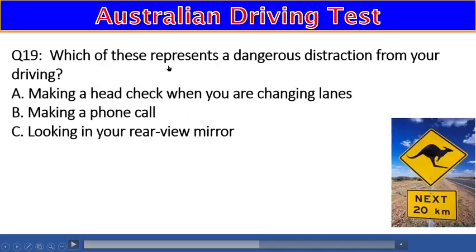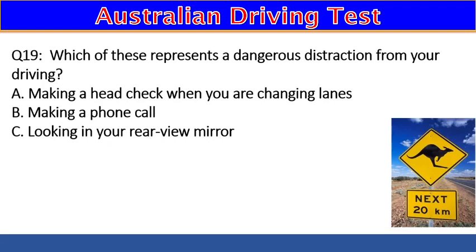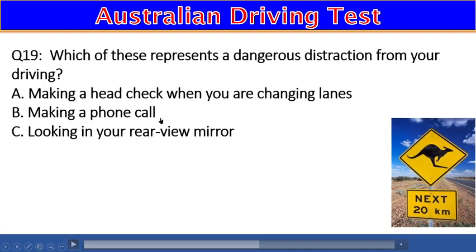Question 19: Which of these represents an endangering distraction from driving? A) Making a head check when changing lanes, B) Making a phone call, C) Looking at your rear view mirror. The right answer is B — making a phone call while driving is very dangerous.